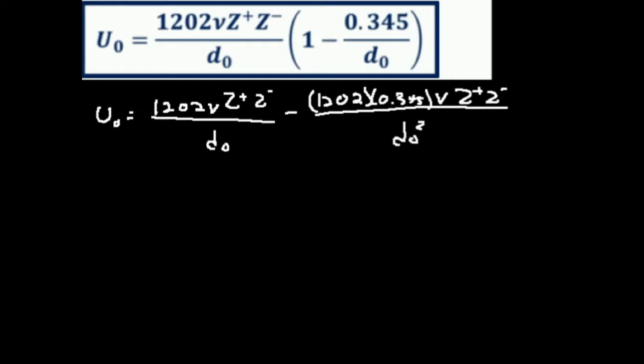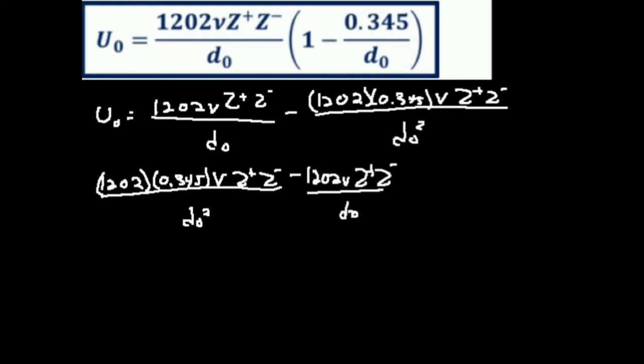So what we ultimately need to do is add everything over to this side. When we add this term, we're going to get 1202 times 0.345 times V times Z+ times Z- over D0 squared. This is going to be subtracted over, so it's going to be minus 1202 V Z+ Z- over D0, and then plus U0 equals 0.